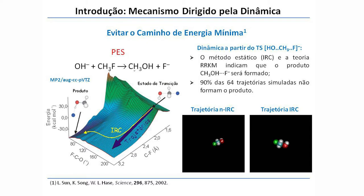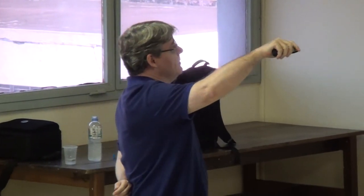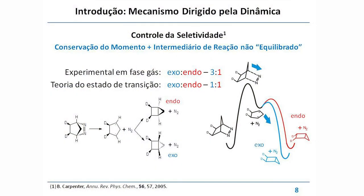Esses são alguns exemplos já relativamente antigos em que o produto formado depende da dinâmica da reação. Um outro exemplo bastante interessante, associado à conservação de momento, é essa reação de eliminação de N2. Temos essa azida aqui — se você eliminar N2, vai gerar um diradical e formar essa ligação, podendo ter o produto endo ou exo dependendo da orientação do anel de três membros com relação aos deutérios.